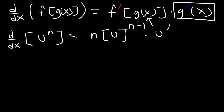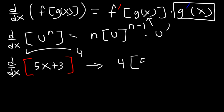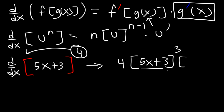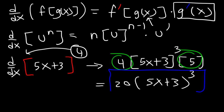Let's use an example. Let's find the derivative of 5x plus 3 raised to the 4th power. The first thing we're going to do is move the exponent to the front, so it's going to be 4. Then keep the inside stuff the same — times 5x plus 3 — and subtract the exponent by 1, so 4 minus 1 is 3. Then multiply by the derivative of the inside. The derivative of 5x plus 3 is just 5. We can multiply 4 and 5 to get 20, so the final answer is 20 times 5x plus 3 raised to the 3rd power.